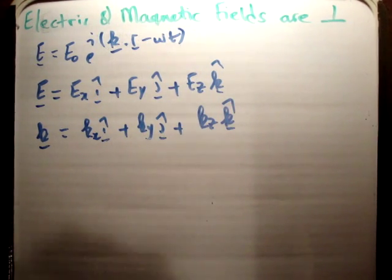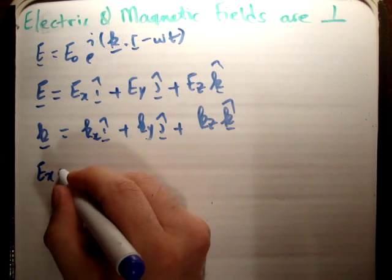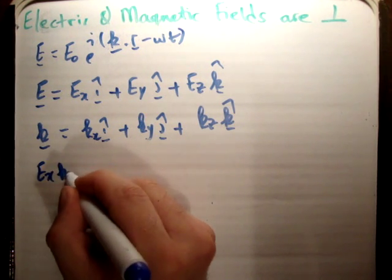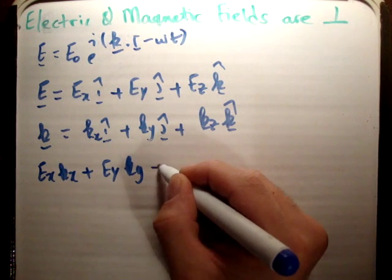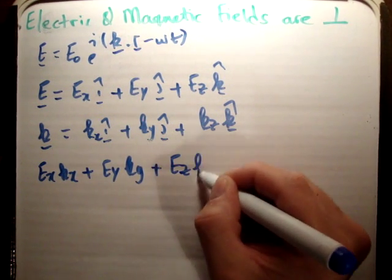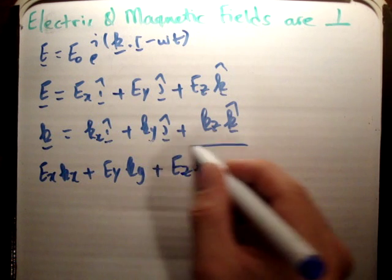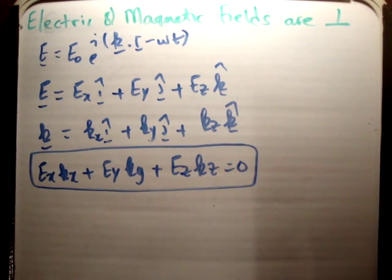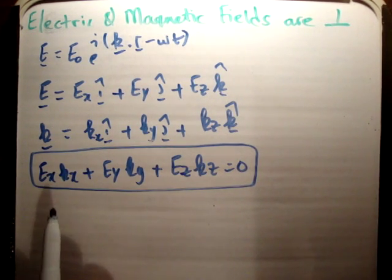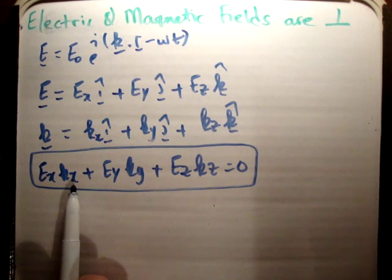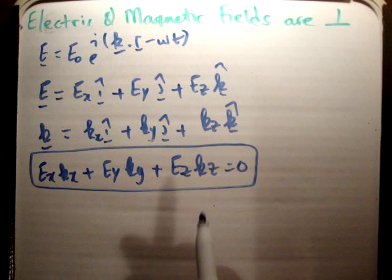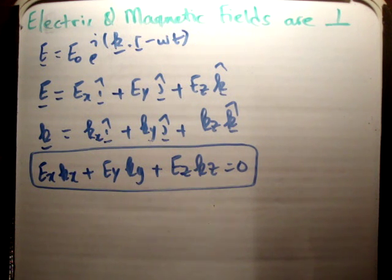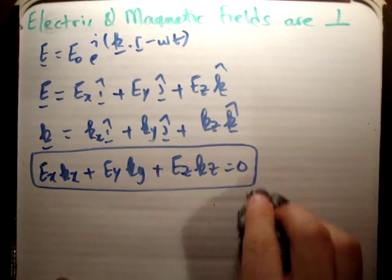You get a simple relation stating that E_x times k_x, plus E_y times k_y, plus E_z times k_z is equal to zero. That's very important — notice that E_x·k_x, E_y·k_y, and E_z·k_z are all added together to get zero. We'll note that in the back of our heads.